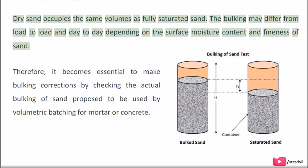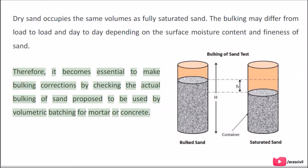Dry sand occupies the same volume as fully saturated sand. The bulking may differ from load to load and day to day depending on the surface moisture content and fineness of sand. Therefore, it becomes essential to make bulking corrections by checking the actual bulking of sand proposed to be used by volumetric batching for mortar or concrete.